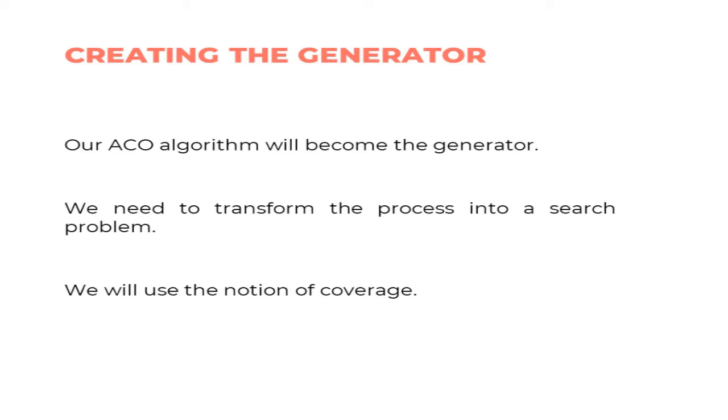How do you generate inputs with ants? To use Ant Colony Optimization for input generation, you need to transform the generation process into a search problem. The ant searches through possible inputs for the most suitable one, requiring a concept of pheromones, a graph, a heuristic, and a coverage-based fitness function. There are several options for this, and many search-based software engineering papers already model automatic test generation as a search process.